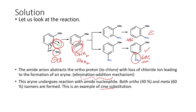Here, chlorine leaves from a position ortho to the methoxy unit and the incoming nucleophile attaches to the meta position as the major product. We also have the same-place substitution where chlorine is replaced at its original carbon, but since the majority of the product formed is at the position adjacent to the chlorine group, we call this a sine substitution.